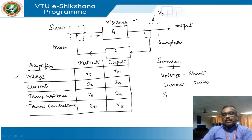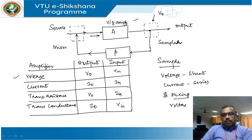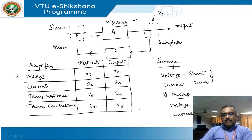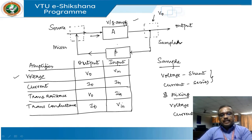So: for mixing, voltage will be connected in series, and current will be connected in shunt. If you remember these two rules for sampling and mixing, we are good to go with the topologies.